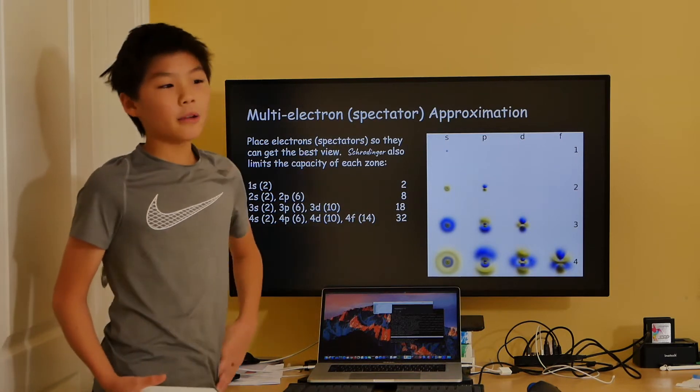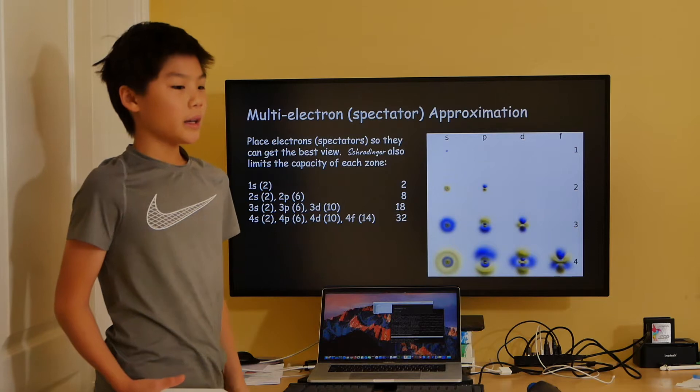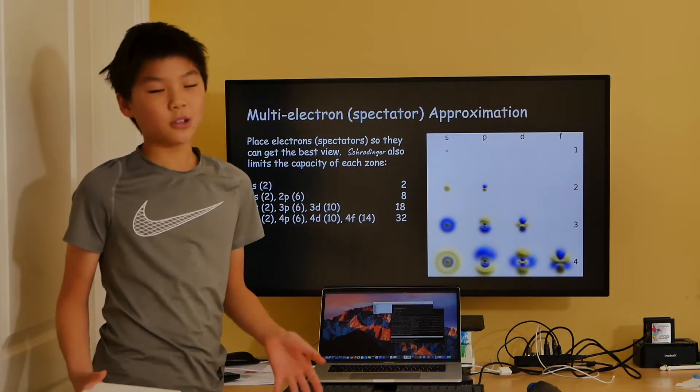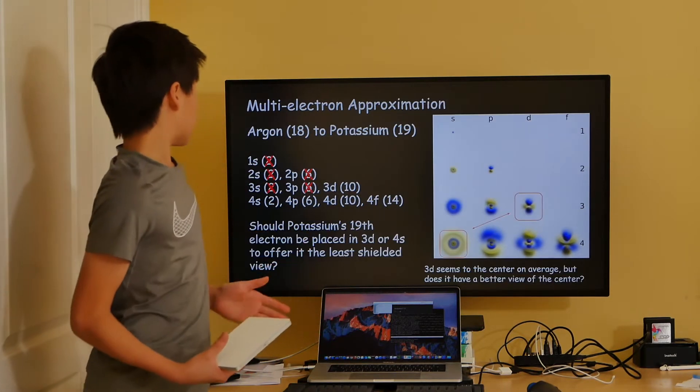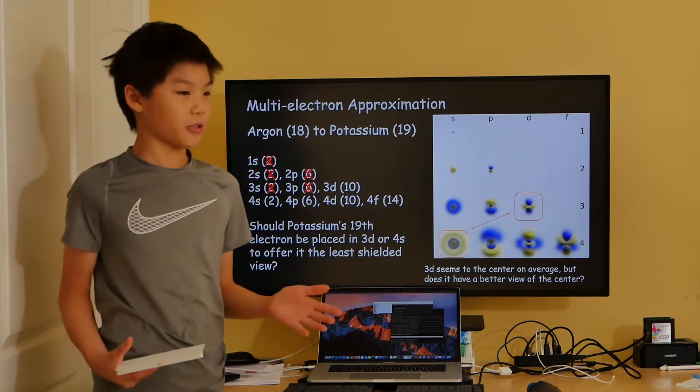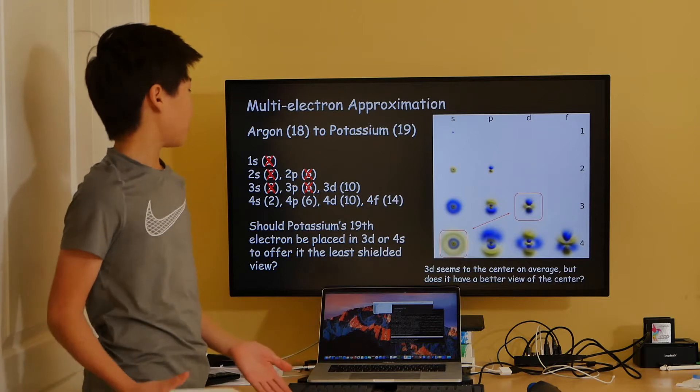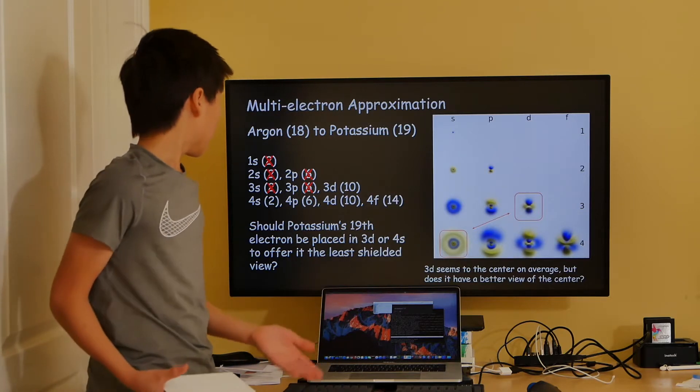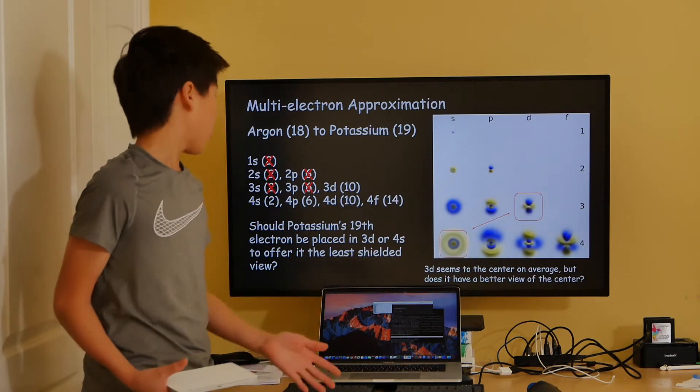Now remember my original question, which is why the filling of the third shell gets interrupted going from argon to potassium. Argon's 18 electrons fill in 1s, 2s, 2p, 3s, and 3p, and the 19th electron of potassium can choose whether to go to the 3d orbital or the 4s orbital.